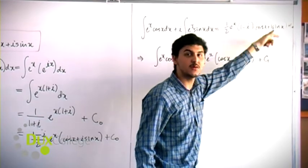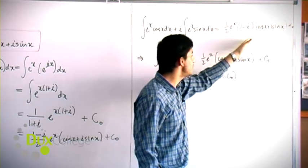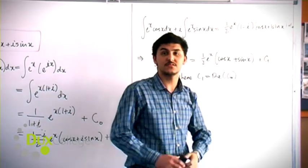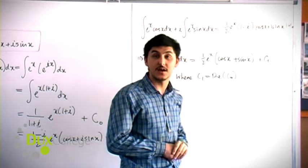The imaginary part, which is -i times i sin x, gives us minus times minus sin x, which equals sin x since two negatives cancel.